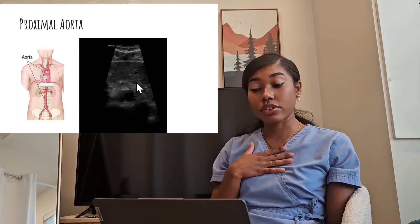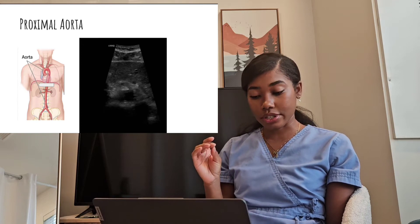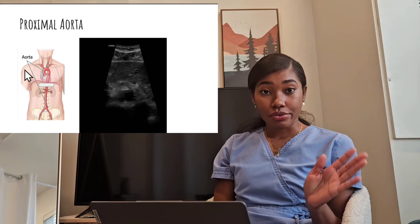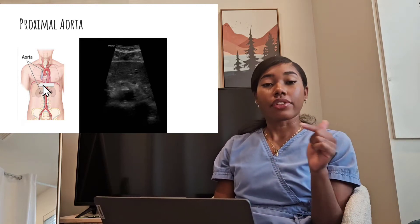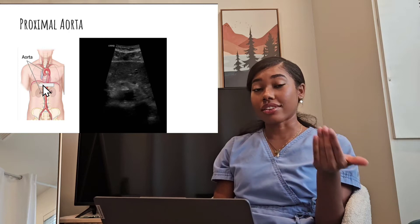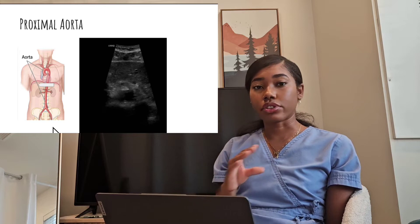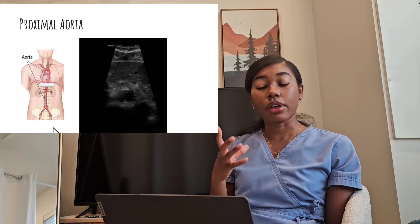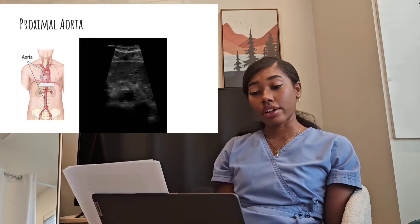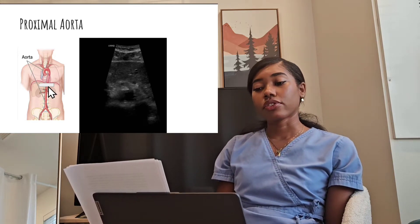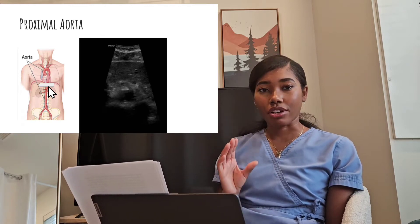Now, let's get into the exam. I always look for the abdominal aorta in the transverse plane first, with the notch facing myself. This white arrow represents the transducer and the direction of the arrow represents the direction that the notch of the transducer should be facing for that image. The proximal aorta is one of the trickiest to image because of the presence of possible bowel gas. We should start right below the sternum and look for the round vessel that is posterior to the liver — this will be the proximal aorta.